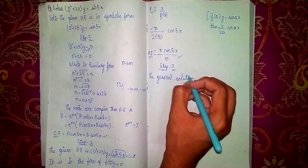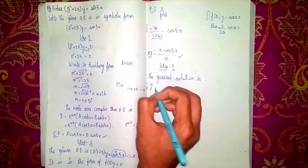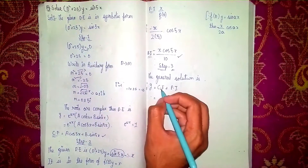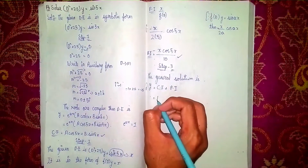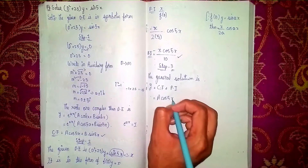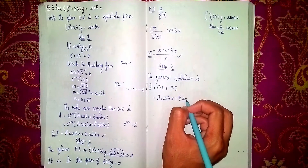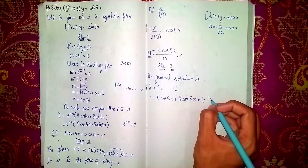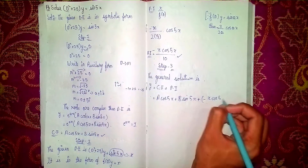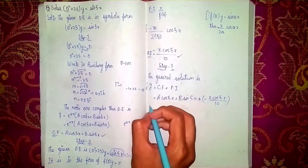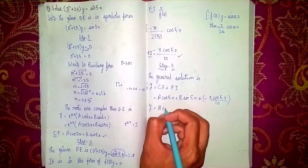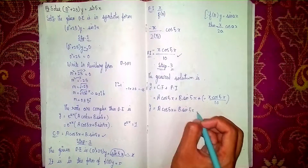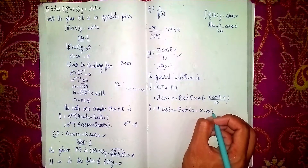Step 3: to find the general solution. The general solution is y equals CF plus PI, which gives y equals A cos(5x) plus B sin(5x) minus x cos(5x) divided by 10.